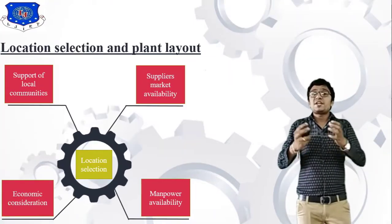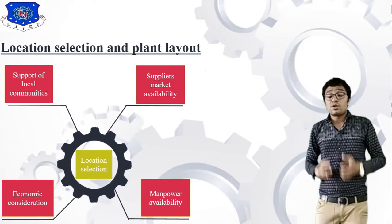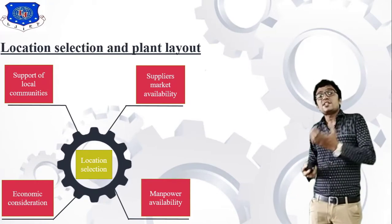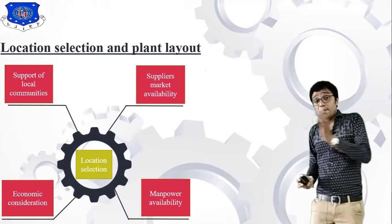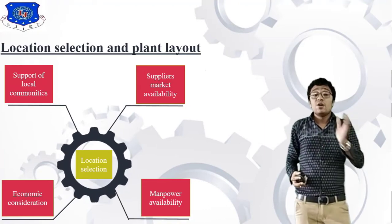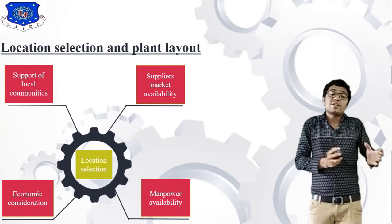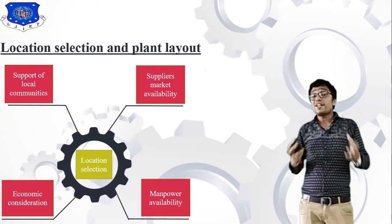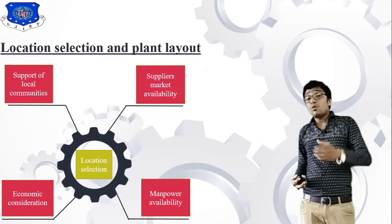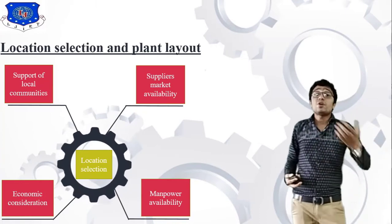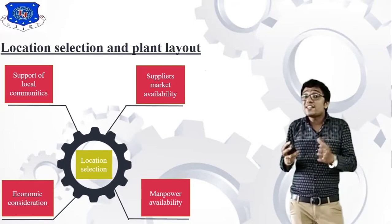To discuss about the industrial engineering syllabus: the first chapter is Location Selection and Plant Layout. Location selection is a basic thing that depends on urban area and rural area. According to your economic consideration, you have to select the location. Plant layout depends on process layout and product layout — according to your operation and your product, you have to select the plant layout.